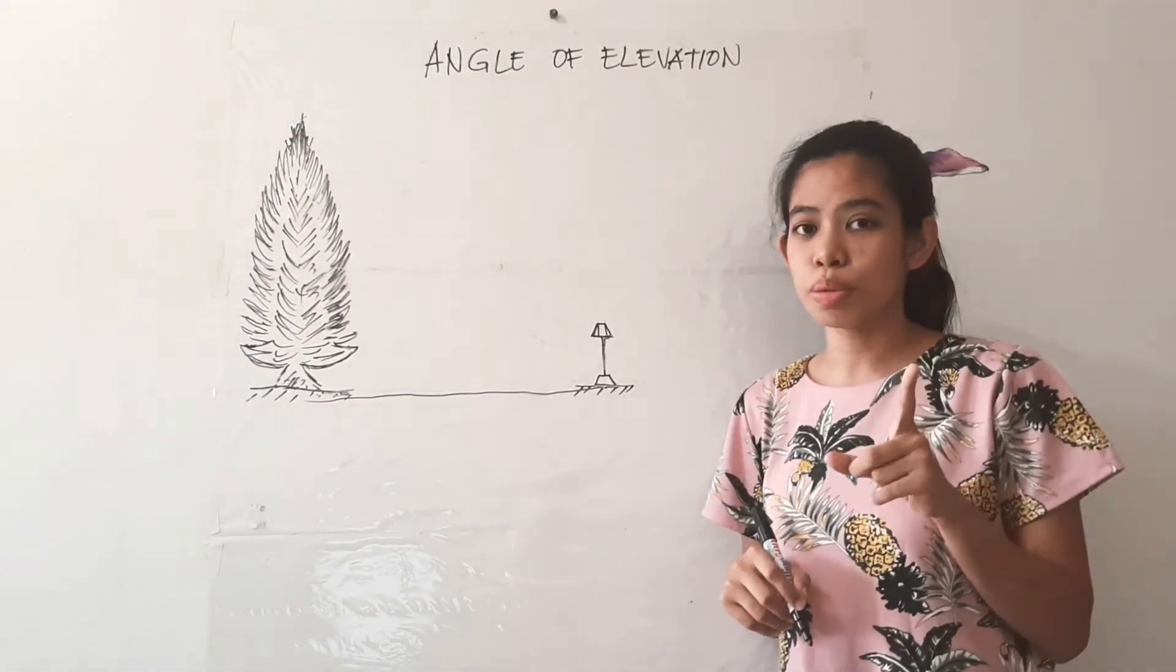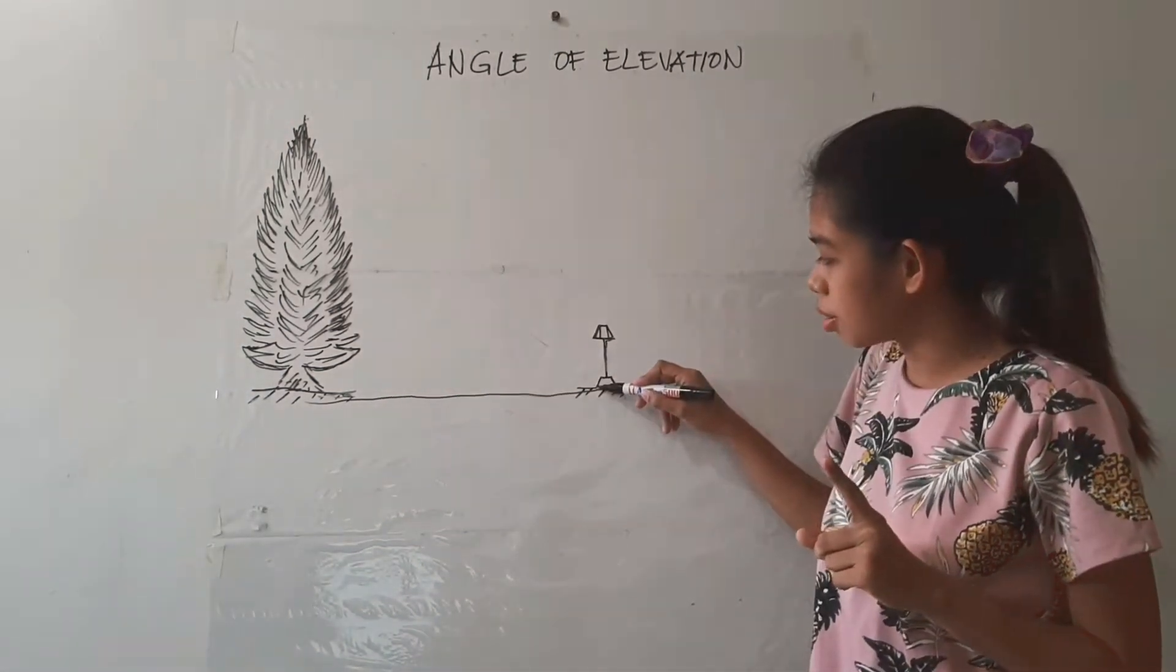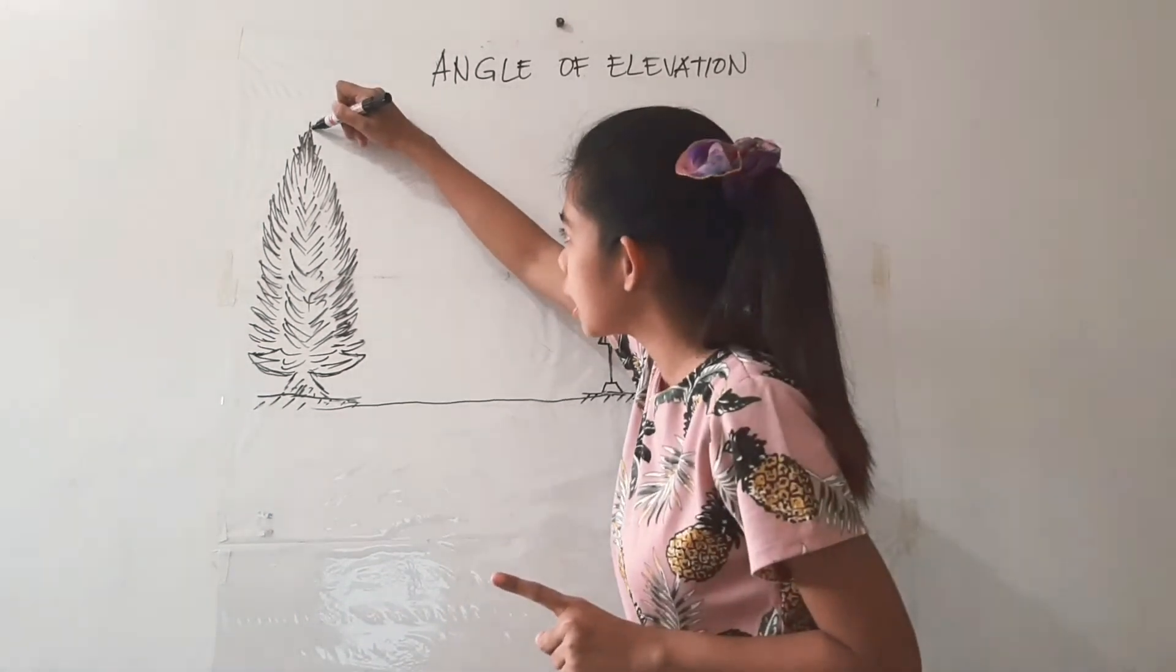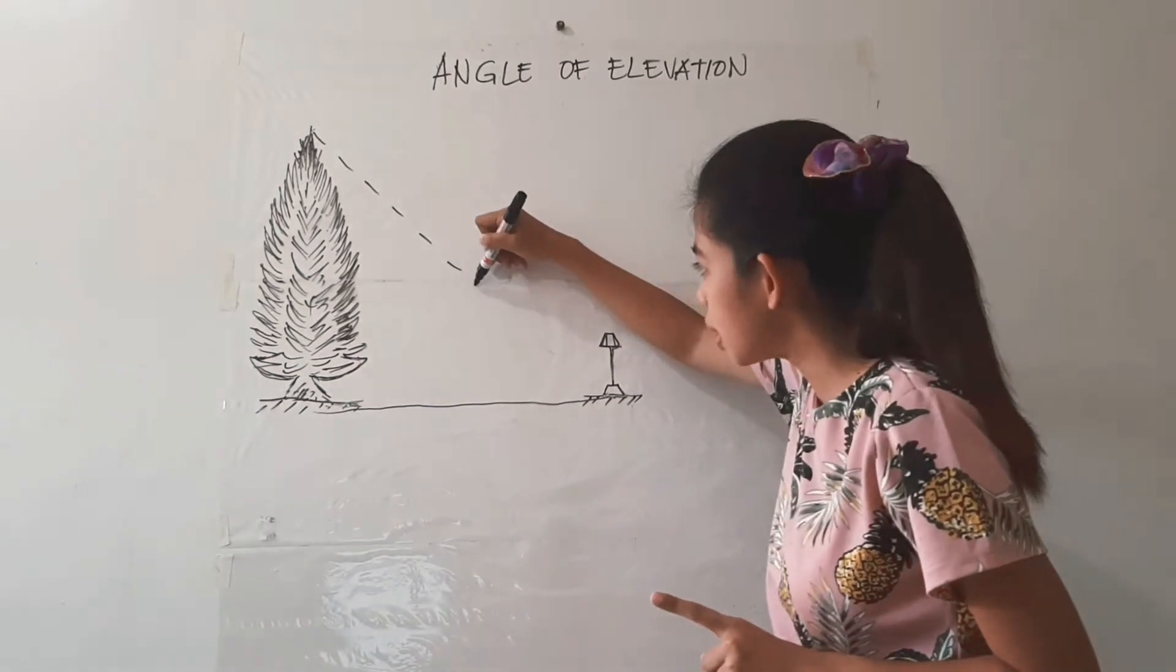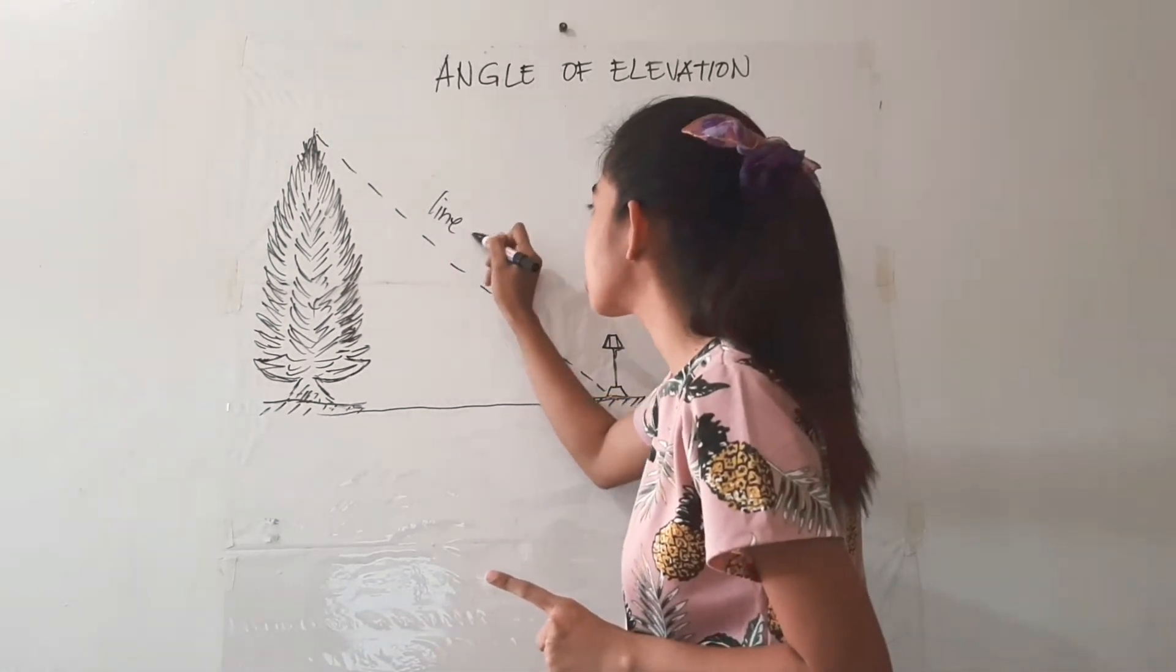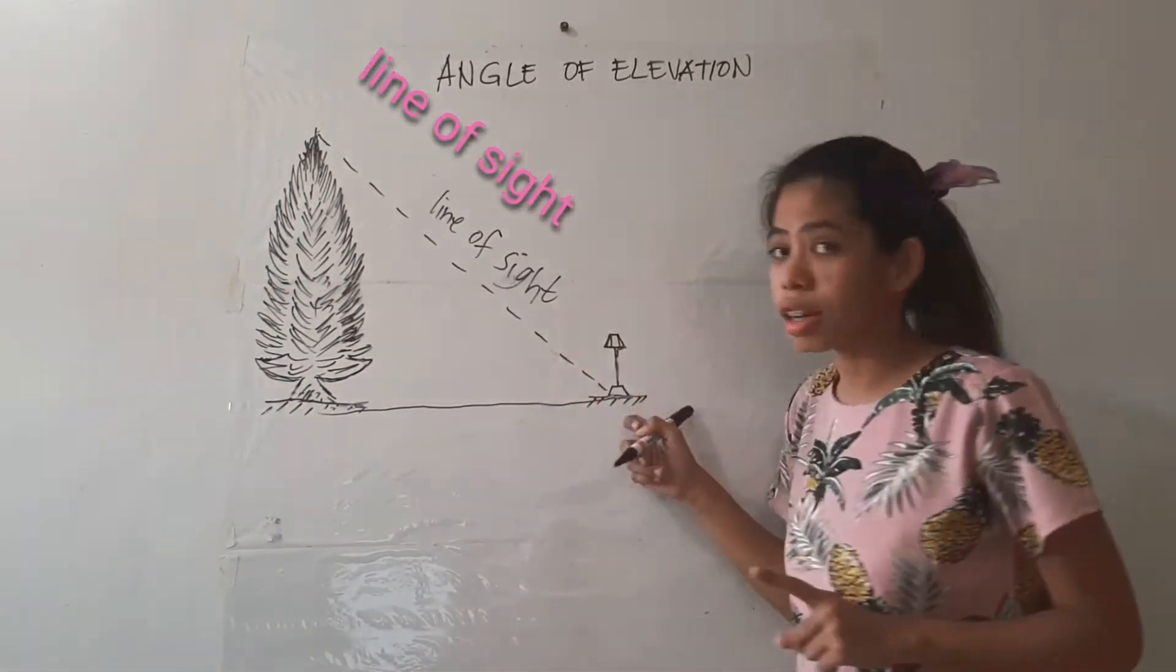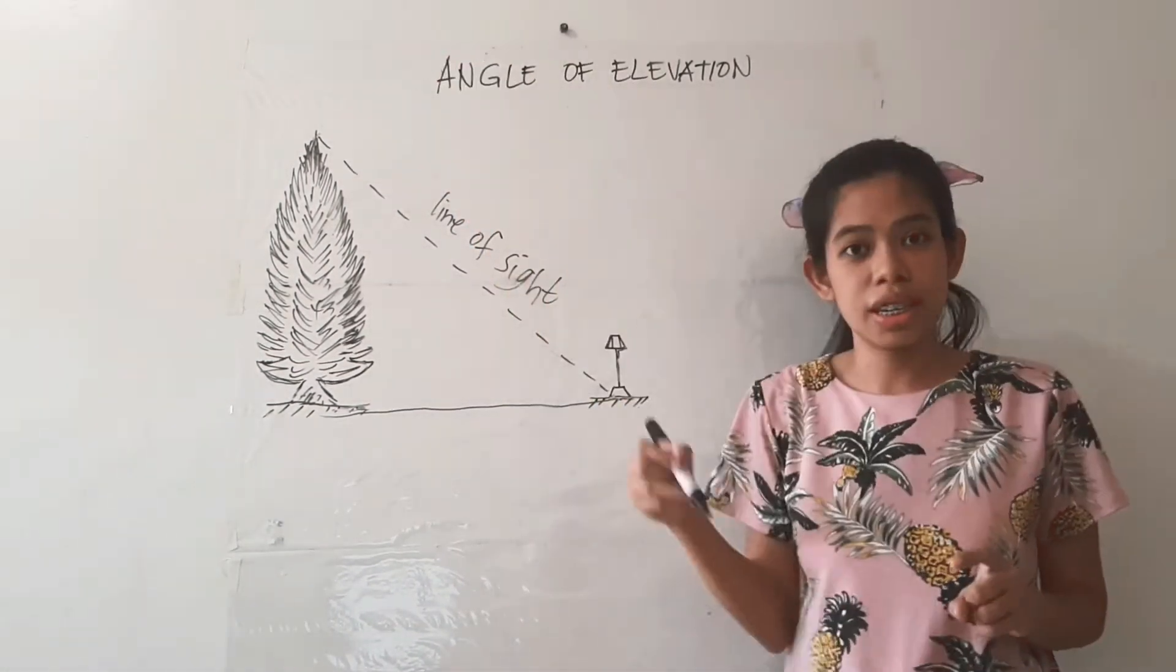Now if you are going to observe the angle formed from the base of the lamppost to the top of the tree, you are going to have first the line of sight. So what is the line of sight? The line of sight connects the base of the lamppost to the object or the top of the tree.